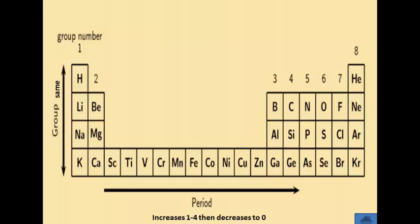All atoms except hydrogen have 2 electrons in the first shell and up to 8 electrons in each succeeding shell. For example, carbon has 6 electrons — 2 in the first shell and 4 in the outermost shell — giving it a valency of 4. Oxygen has 8 electrons — 2 in the first shell and 6 in the outermost shell — giving it a valency of 2.